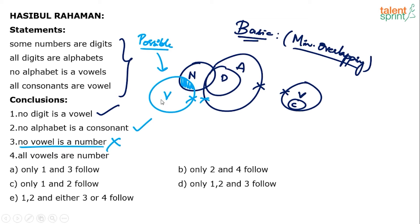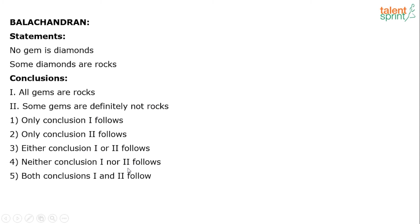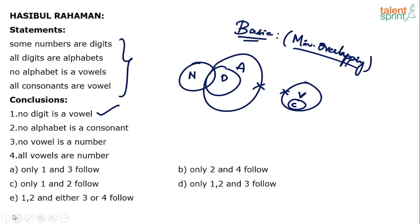Conclusion 4: all vowels are number. Looking at the basic diagram itself, this fails immediately — vowels and numbers do not touch at all in the basic diagram. So how can all vowels be numbers? There's no need to even check possible diagrams here. A conclusion which fails in the basic diagram is always false. So conclusion 4 also does not follow. First and second conclusions are true; third and fourth are false.